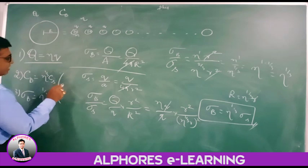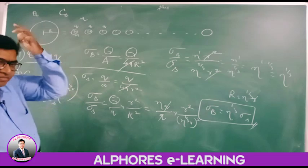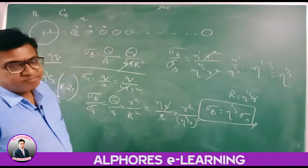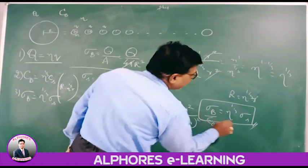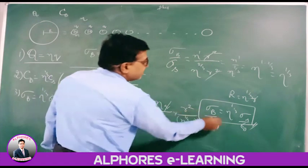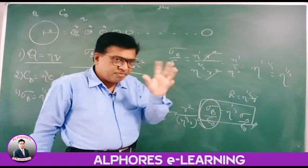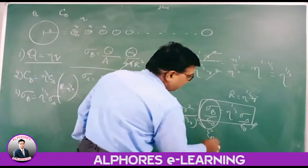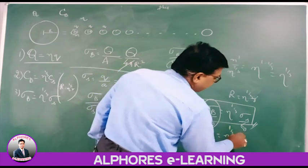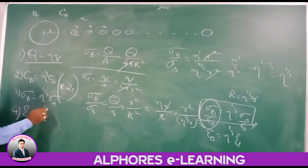The radius of the bigger drop is N^(1/3) times the smaller, and the surface charge density also changes. For a charged sphere, the electric field on the surface is σ/ε₀. Since electric field depends purely on surface charge density, the electric field intensity on the big drop is also N^(1/3) times the electric field on the small drop.